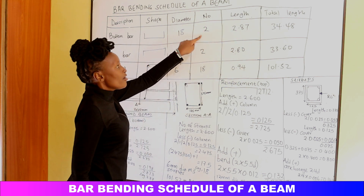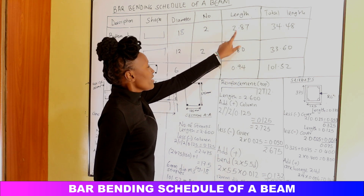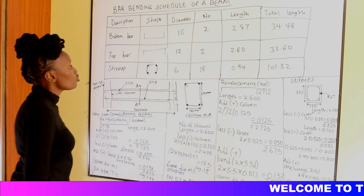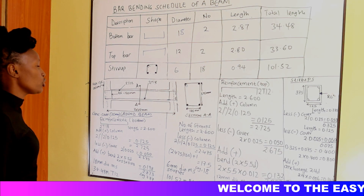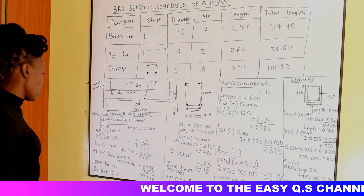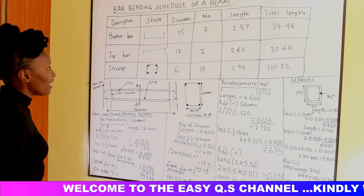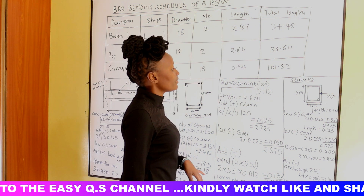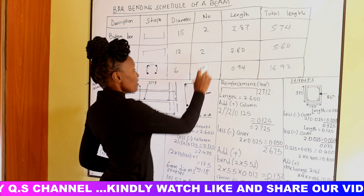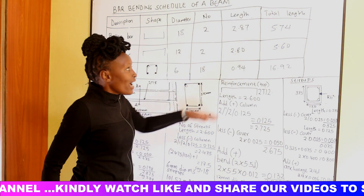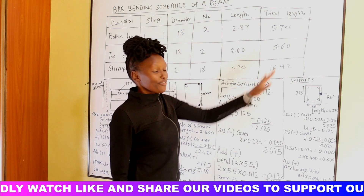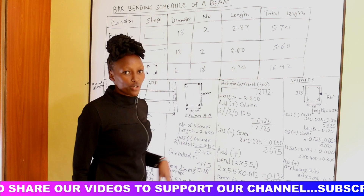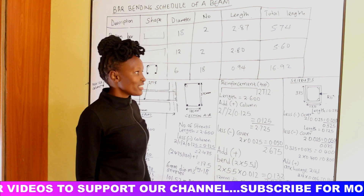The number of T18 bottom bars is 2, each 2.87 m long. Total length = 2 × 2.87 = 5.74 m. For the T12 top bars, 2 bars each 2.80 m gives a total length of 5.60 m.